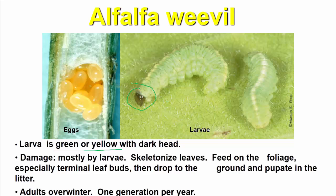The larvae skeletonize leaves and feed on the foliage, especially terminal leaves. They drop to the ground and pupate in the litter. Adults overwinter; there is one generation per year.